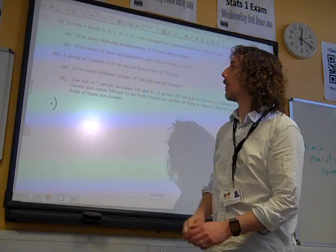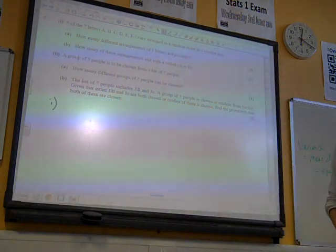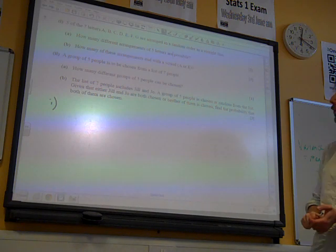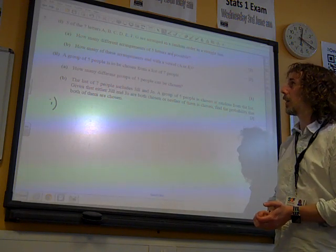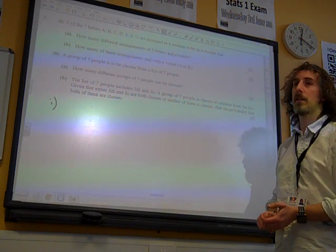Question 7. We've got 5 of the 7 letters A, B, C, D, E, F and G arranged in a random order in a straight line. How many different arrangements of 5 letters are possible?